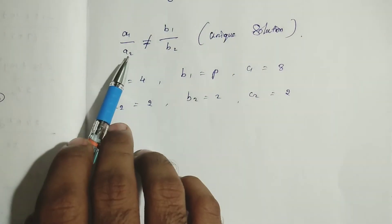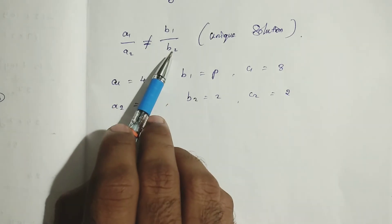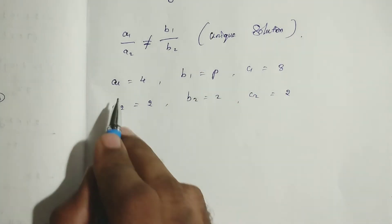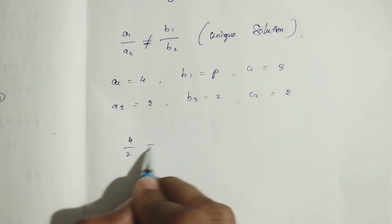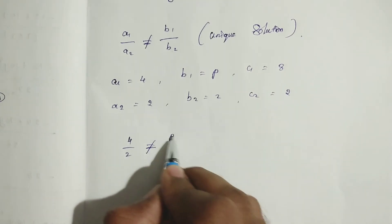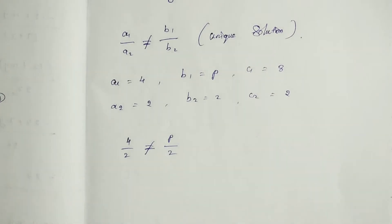Because A1 divided by A2 not equal to B1 by B2, that is a unique solution. Now we can substitute the value of A1 and A2, that is 4 by 2, which is not equal to p by 2. Clear?